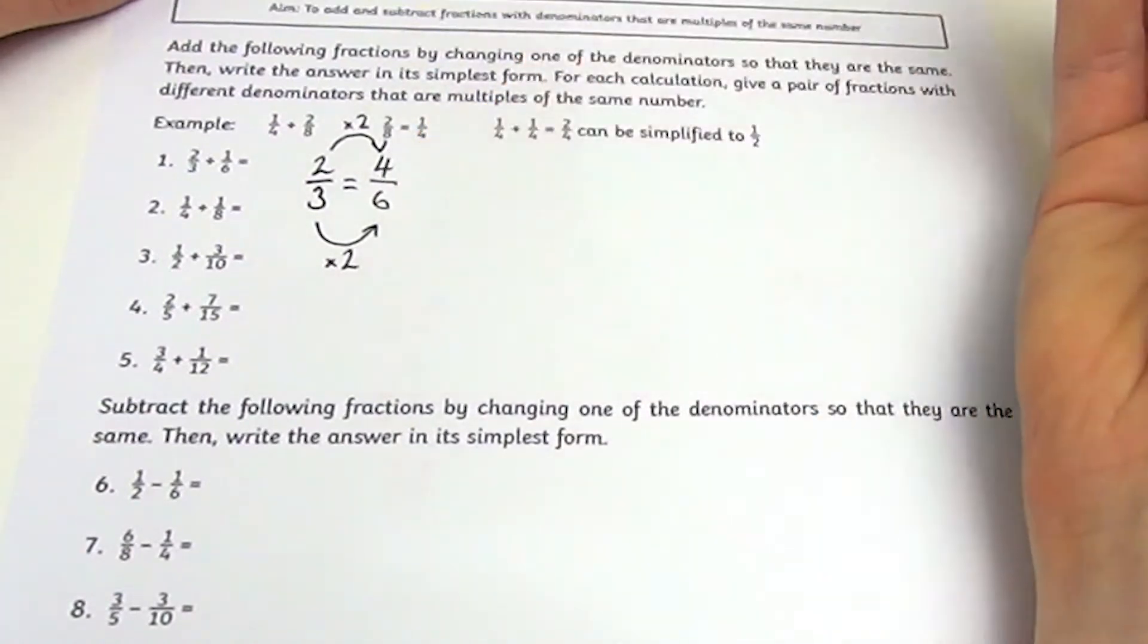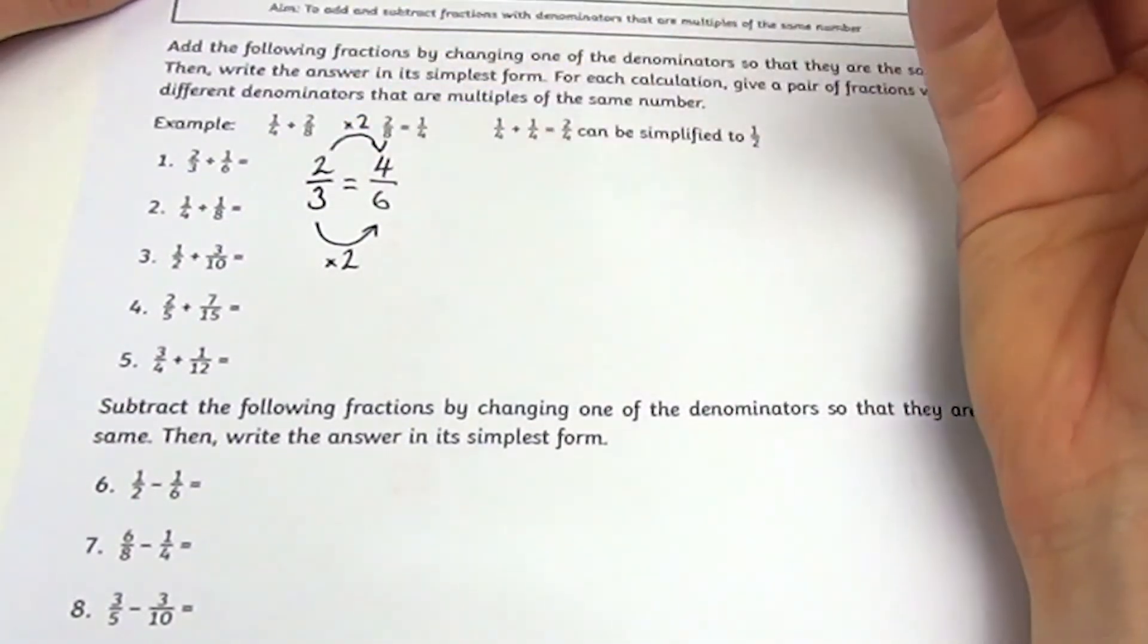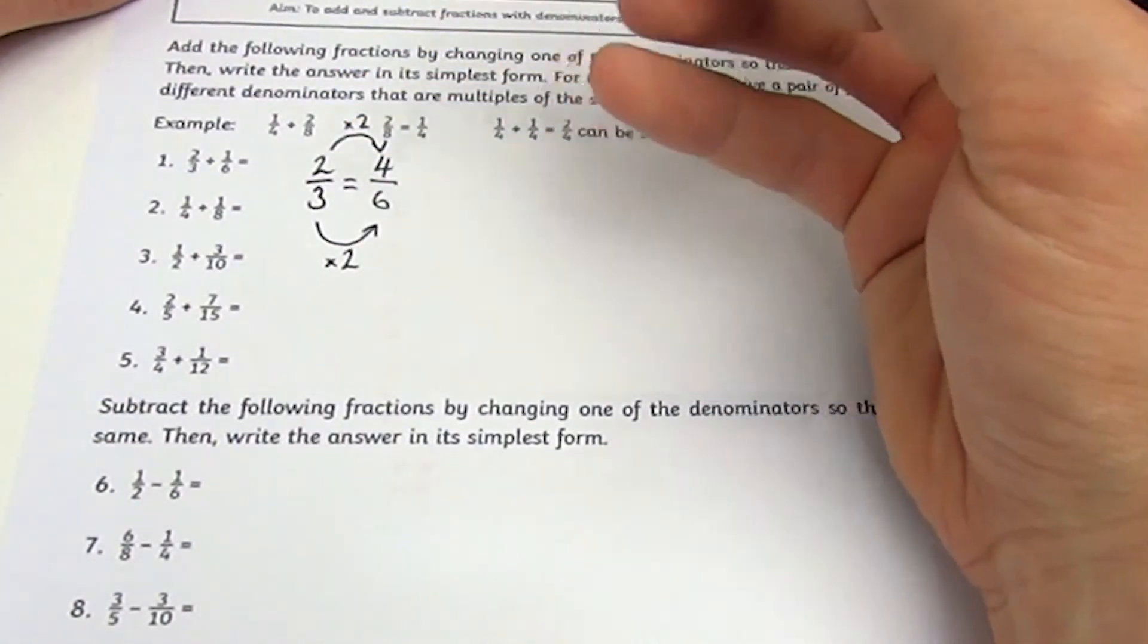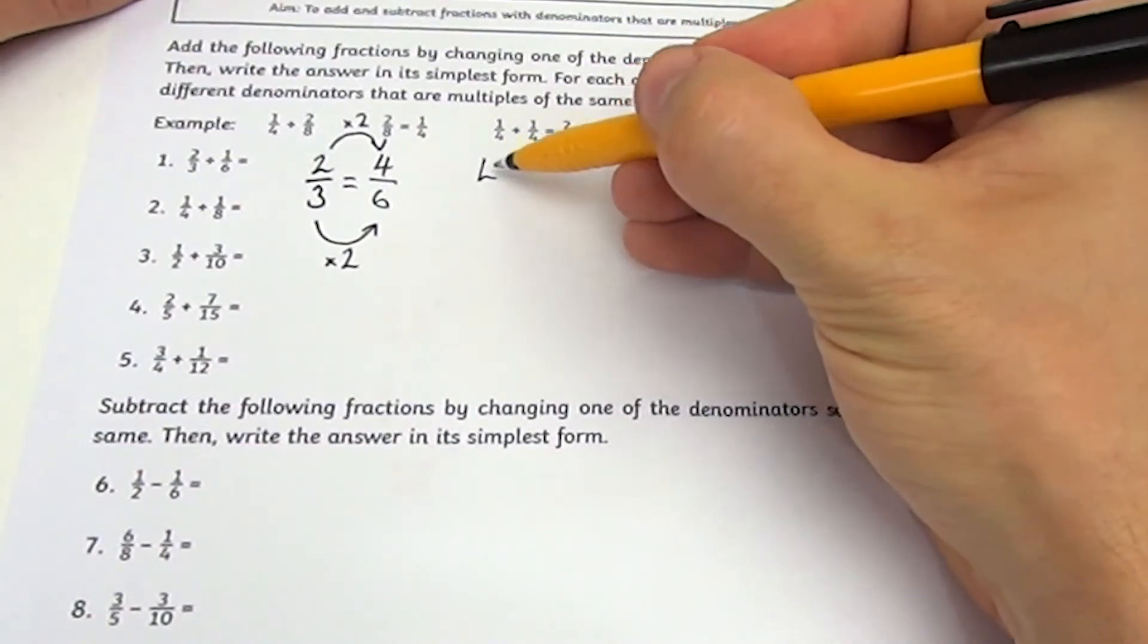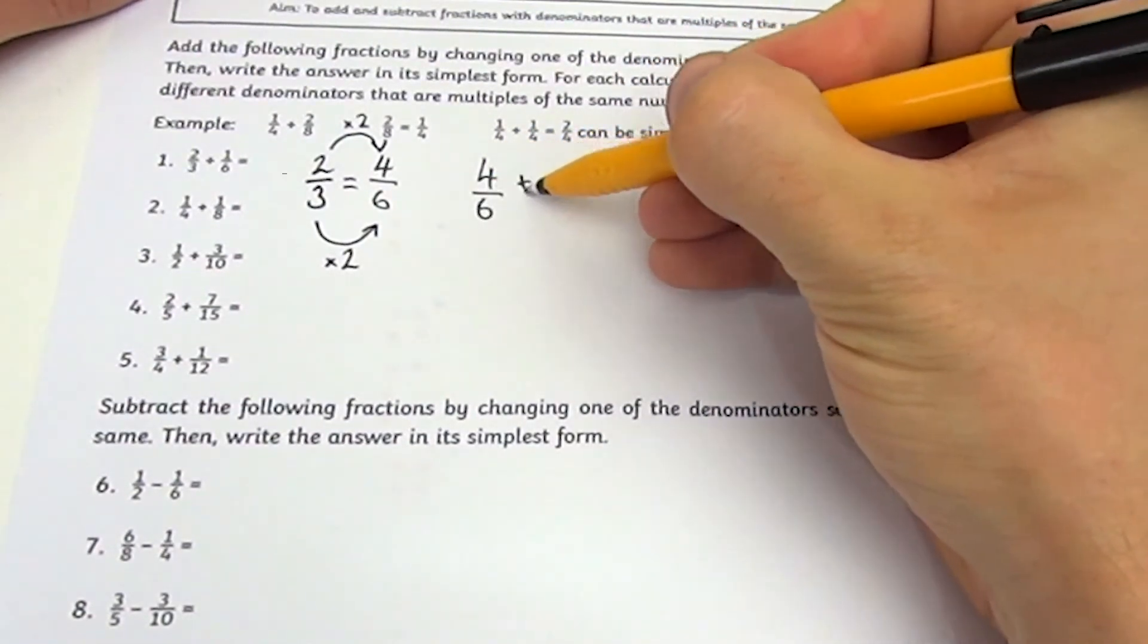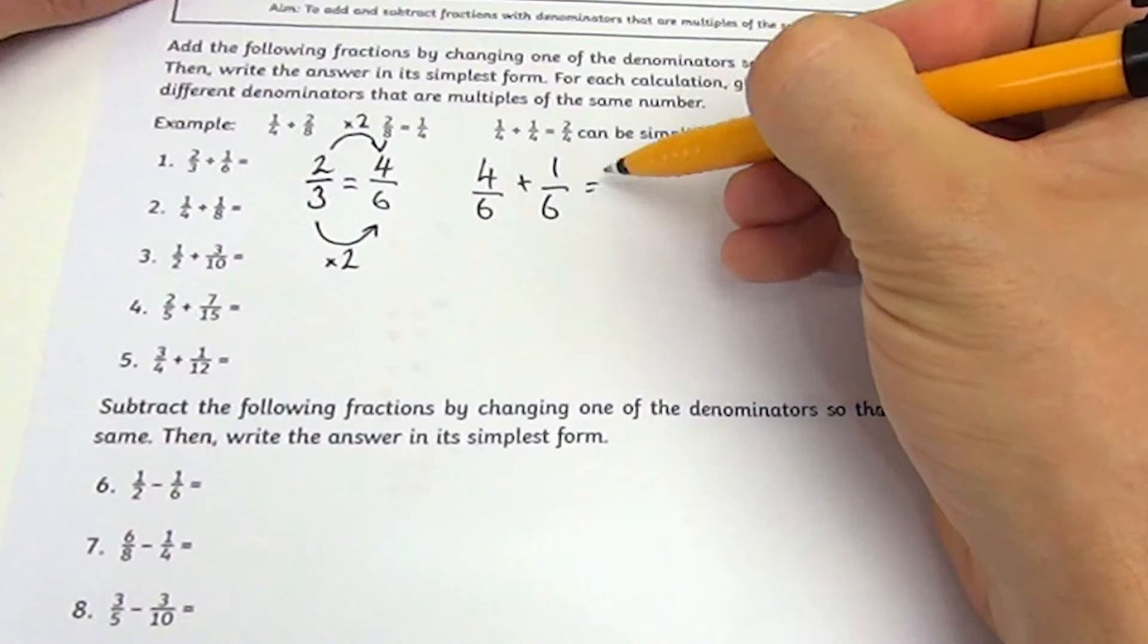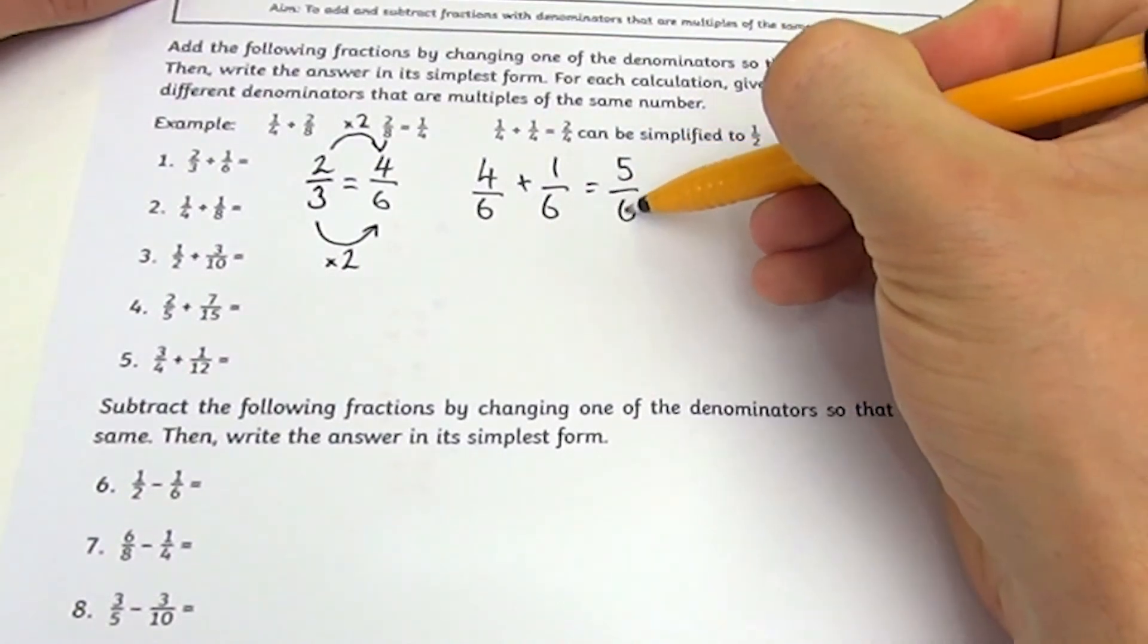Because 2/3 and 4/6 have the same value, I can replace it in my calculation: 4/6 add 1/6 equals 5/6. These sheets could be used as part of your next maths